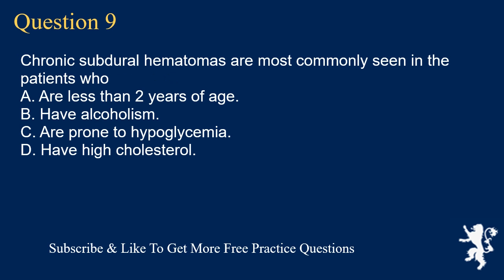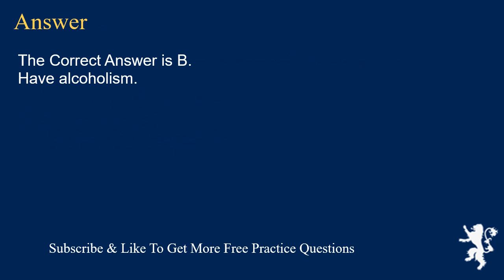Question 9. Chronic subdural hematomas are most commonly seen in patients who: A. Are less than 2 years of age. B. Have alcoholism. C. Are prone to hypoglycemia. D. Have high cholesterol. The correct answer is B. Have alcoholism.